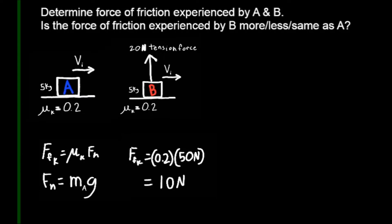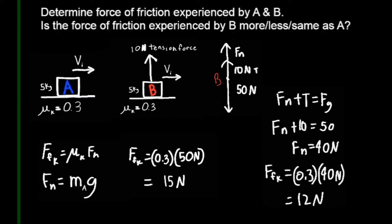Now for the force of friction experienced on B, I'd draw the free body diagram if needed, but since we know that the normal force plus the tensile force equals the force of gravity, we could plug in these values and solve for the normal force. Since the tensile force is 10 newtons and the force of gravity is 50 newtons, when we subtract we get the normal force of 40 newtons.